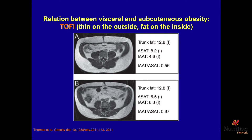On this slide we have CT scans through the abdomen of two equally weighted people. Notice trunk fat: 12.8 and 12.8. One's healthy, one's sick. B is sick. A has increased subcutaneous fat — big butt fat, if you will — cosmetically undesirable but metabolically inert. This guy is metabolically healthy obese. This guy down here has less butt fat, but take a look inside: all the fat around his organs — intra-abdominal fat.